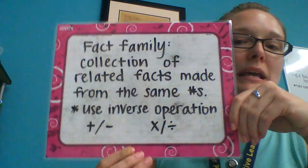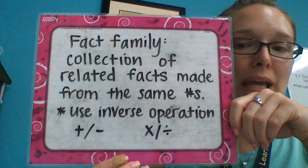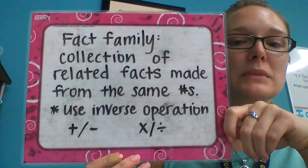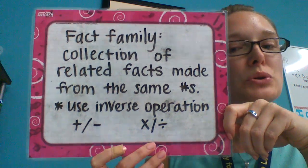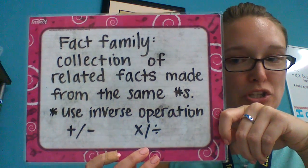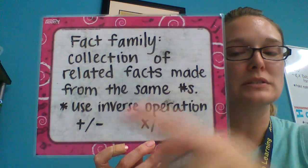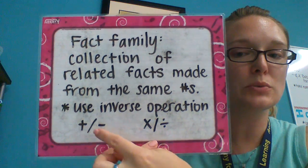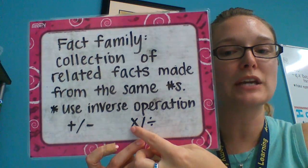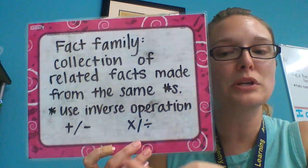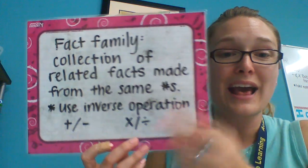A fact family is a collection of related facts made from the same numbers. You use the inverse operation on those same numbers. If you did addition, you would use subtraction. If you do multiplication, you would use division. So we are going to use what we know about multiplication, and that is going to help us solve some division problems today.